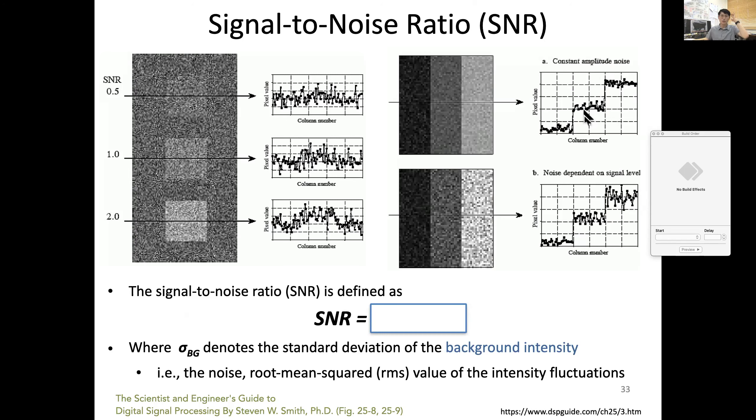What's interesting is that some noises depend on the signal level. In this case, noise is higher when the signal is higher. A good example is photon shot noise. If you have higher level of signal, the level of fluctuation goes high. In photon shot noise, the level of noise is proportional to the square root of the signal.